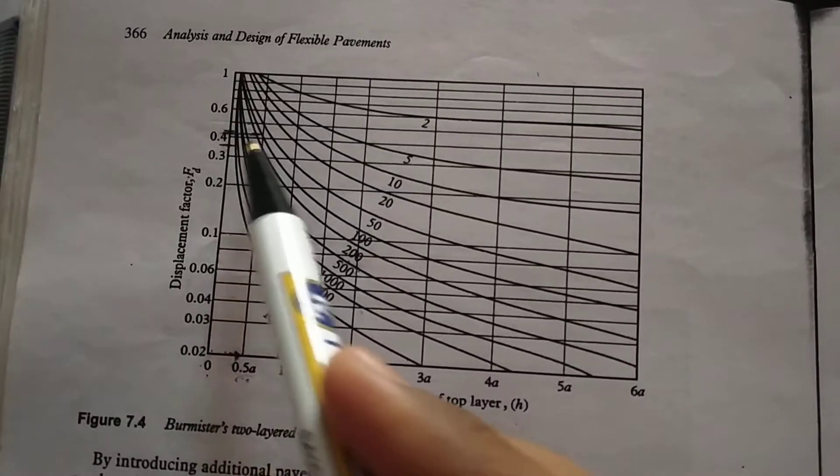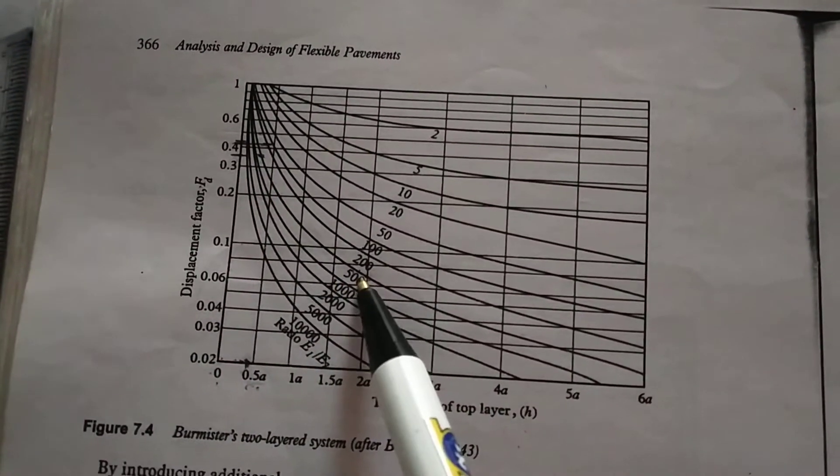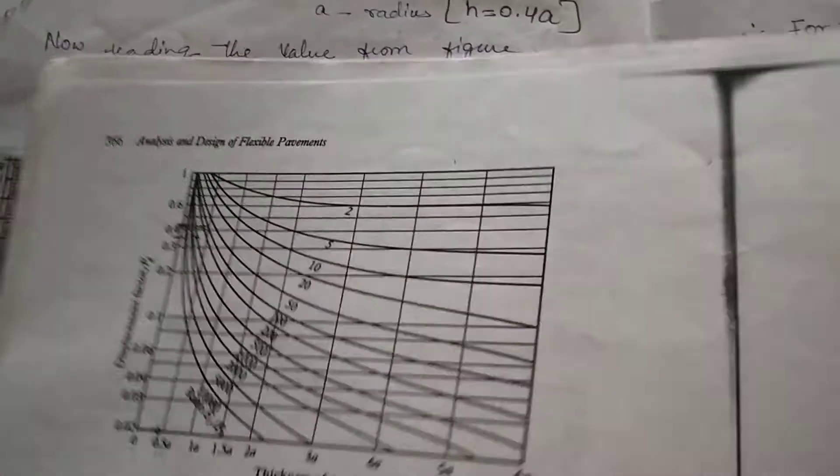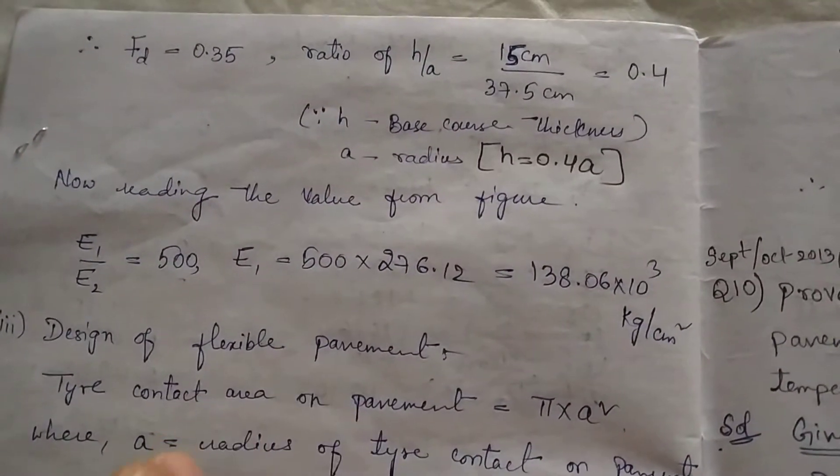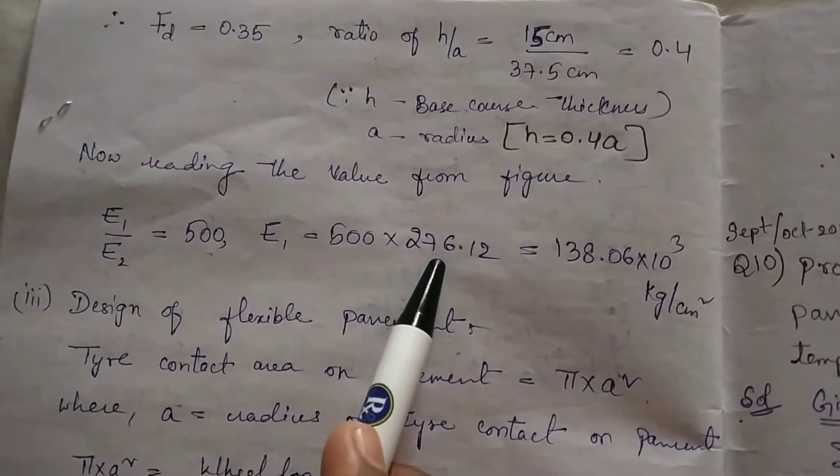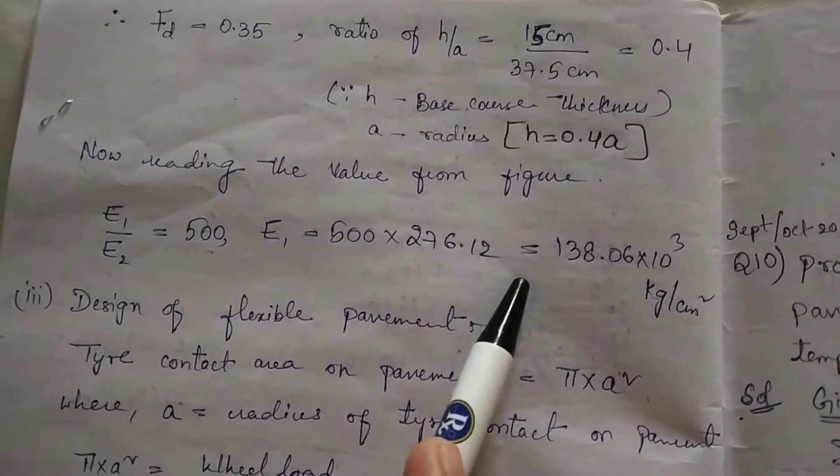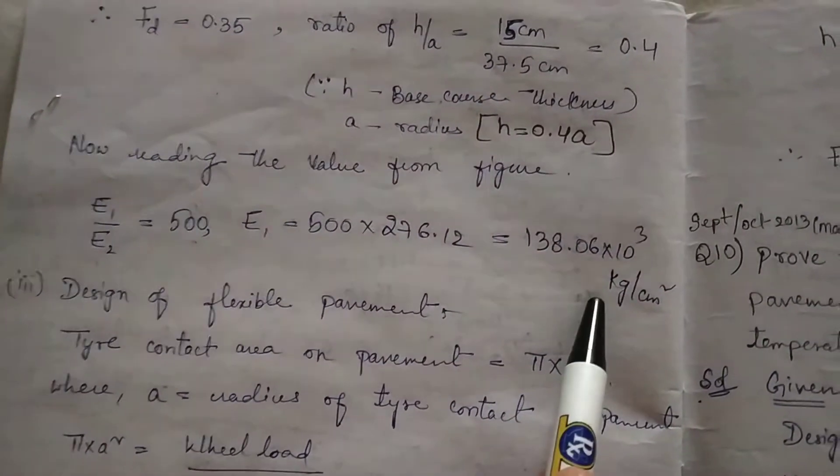I am getting 500, so I will take E1 by E2 as 500. E1 by E2 equal to 500, so E1 equals 500 E2. E2 as I have calculated is 27.612. I will get the value for E1 in kg per centimeter square.